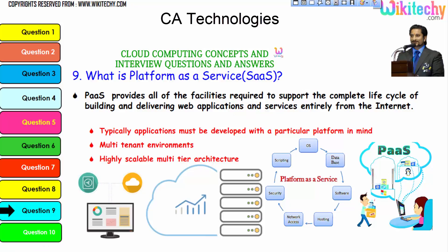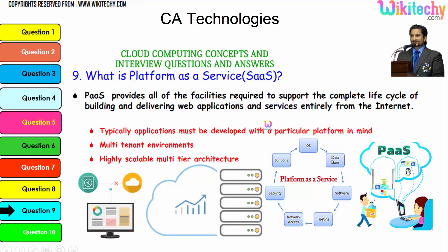Now, what is Platform as a Service? PaaS provides all the facilities required to support the complete lifecycle of building and delivering web applications and services entirely from the internet. Typically applications must be developed with a particular platform in mind. It's a highly scalable, multi-tenant architecture. PaaS means they give you the server with a particular operating system — you're renting an OS — and you can install software, database, hosting, network access, security, and scripting.